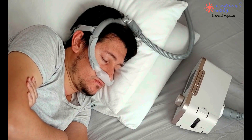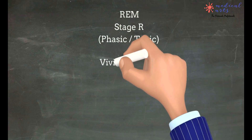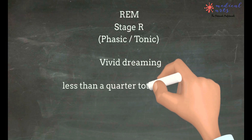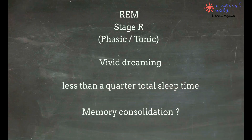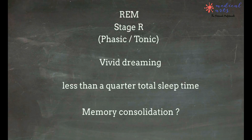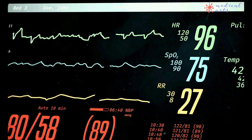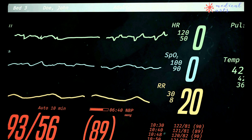REM sleep, also known as stage R, is characterized by rapid, irregular eye movements under the eyelids, and sleep paralysis — inactivity of all voluntary muscles except for the breathing and some eye muscles. REM sleep has typically been associated with vivid dreaming. Although REM sleep accounts for less than a quarter of total sleep time, it is associated with more irregularities in heart rate, respiratory rate, blood pressure, and ventilation, worsening pre-existing obstructive sleep apnea or other sleep disorders.